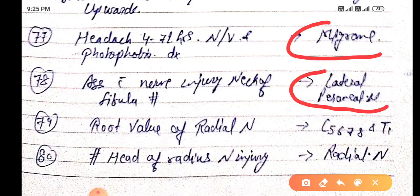Root value of radial nerve: C5, C6, C7, C8, and thoracic 1. Fracture of head of radius: nerve injury is radial nerve.